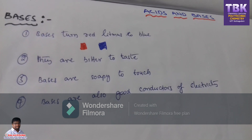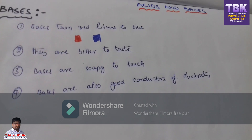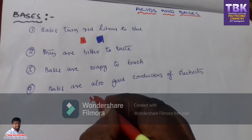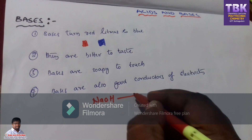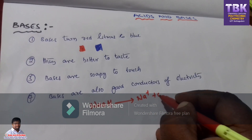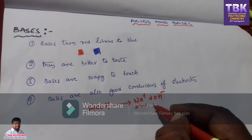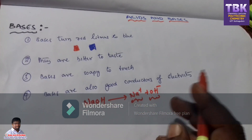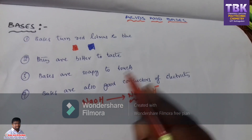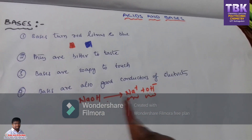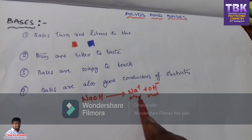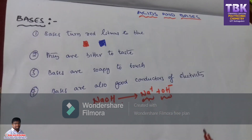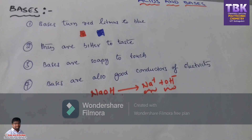Fourth point: bases are also good conductors of electricity. The basic example is sodium hydroxide NaOH. It splits into Na⁺ and OH⁻ ions. Since they have ions, they act as good electricity conductors. Acids have ions, so they act as good electricity conductors, and bases also have ions — for example, NaOH produces Na⁺ and OH⁻ ions — so they also act as good electricity conductors.